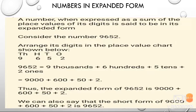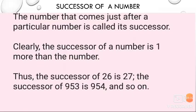Thus, the expanded form of 9,652 is 9,000 + 600 + 50 + 2. We can also say that the short form of 9,000 + 600 + 50 + 2 is 9,652. Now, moving towards our next topic.